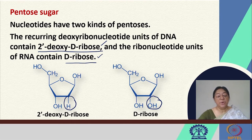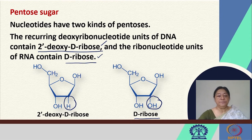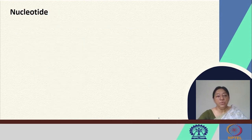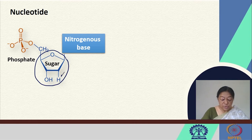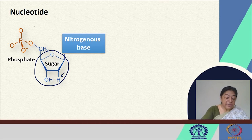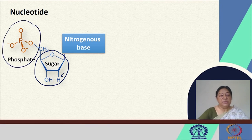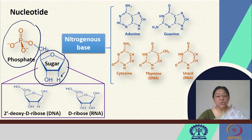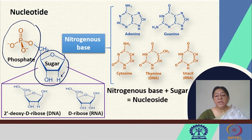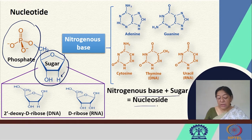DNA has 2'-deoxy-D-ribose and RNA has D-ribose. In the formation of the nucleotide, the OH is missing at the 2' position, making it a deoxy-sugar where oxygen is absent. The nitrogenous base is attached here along with the phosphate group — these three components give us what is called a nucleotide. The nitrogenous base and the sugar alone are called the nucleoside; when the phosphate is attached it is called the nucleotide.